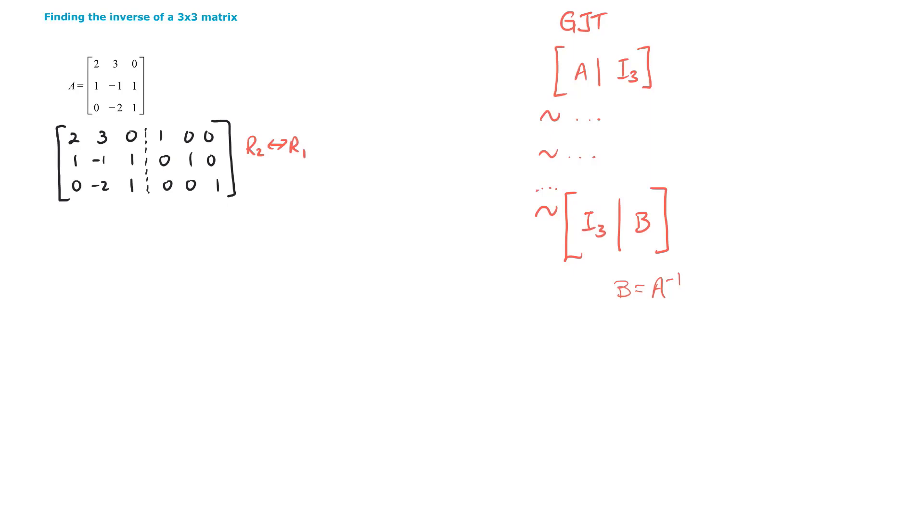This is now row equivalent and we use a tilde symbol to show row equivalent. 1, negative 1, 1. 2, 3, 0. 0, negative 2, 1. Row 3 never changed. And then we have 0, 1, 0 here, 1, 0, 0 here.